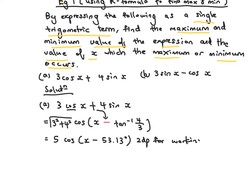The final answer is to 1 dp, so it's 5cos(x − 53.1°). That is the answer for expressing the two trigonometric terms into a single trigonometric term.